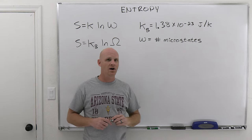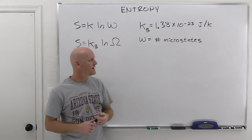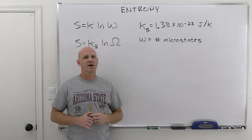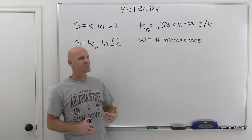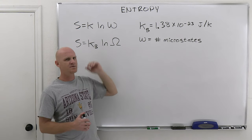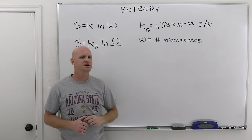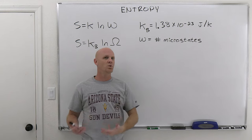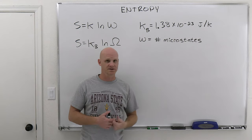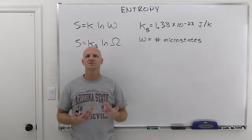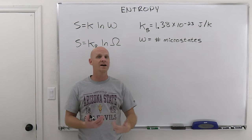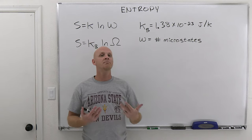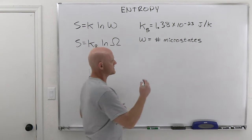So entropy comes down to these microstates. How does this correlate to disorder or randomness? Well, systems that tend to have more disorder or randomness have more microstates in which they can exist.